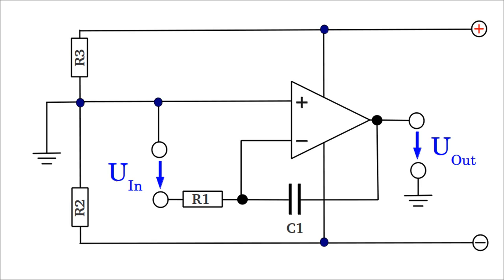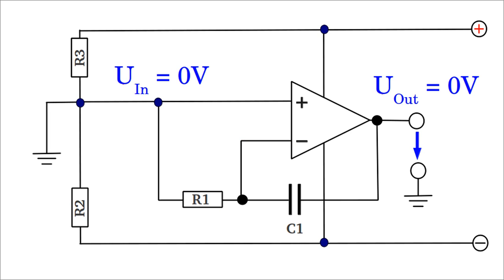There is negative feedback provided by the capacitor, hence the potentials at the inverting and non-inverting inputs are held equal by the operational amplifier, as demonstrated in the video about those devices. The non-inverting input is connected to ground, while the inverting input is connected to the input terminal of the circuit through resistor number 1. If the input clamp is connected to ground, the difference in potential between the inverting and non-inverting input is 0V, hence the resulting output voltage of the operational amplifier is 0V too.